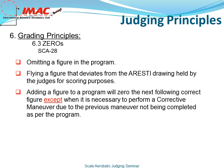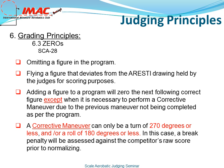Adding a figure to a program will zero the next following correct figure, except when it is necessary to perform a corrective maneuver due to the previous maneuver not being completed as per the program. Here's an example: the humpty bump was flown first, and then the pilot flew a loop or turns or something in the center, and then flew the reverse half Cuban. The reverse half Cuban, number two, would be zeroed because a figure was added to the program. A corrective maneuver can only be a turn of 270 degrees or less and/or a roll of 180 degrees or less. In this case, a break penalty would be assessed against the competitor's raw score prior to its normalizing.